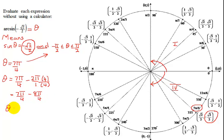So what's my answer? Theta equals negative π over 4. And that is the correct answer.